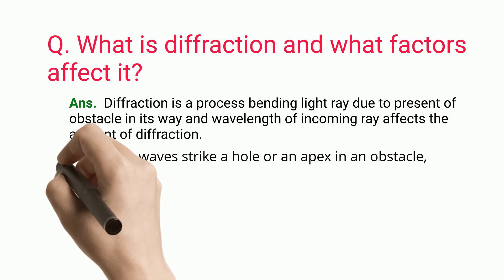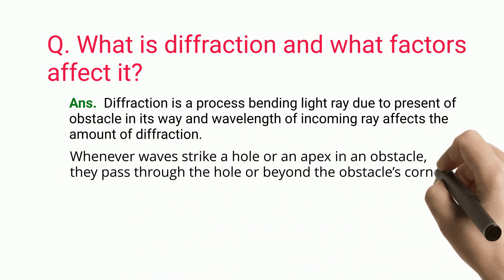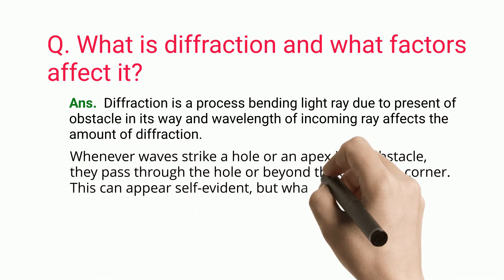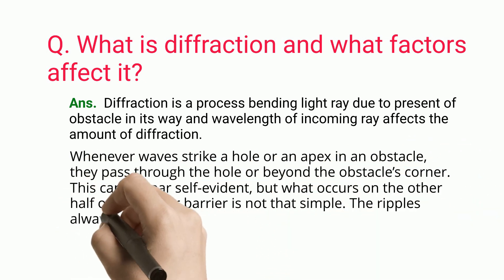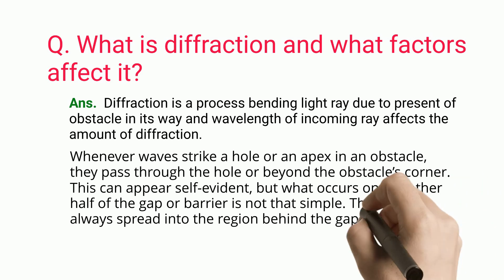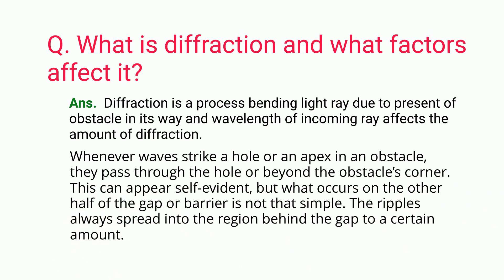Whenever waves strike a hole or an apex in an obstacle, they pass through the hole or beyond the obstacle's corner. This can appear self-evident, but what occurs on the other half of the gap or barrier is not that simple. The ripples always spread into the region behind the gap to a certain amount.